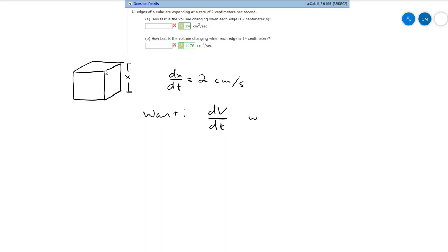And then we want to do that when x is equal to 2 for part a, and then when x is equal to 14 for part b. We can answer both of those questions once we figure out what dv/dt is.